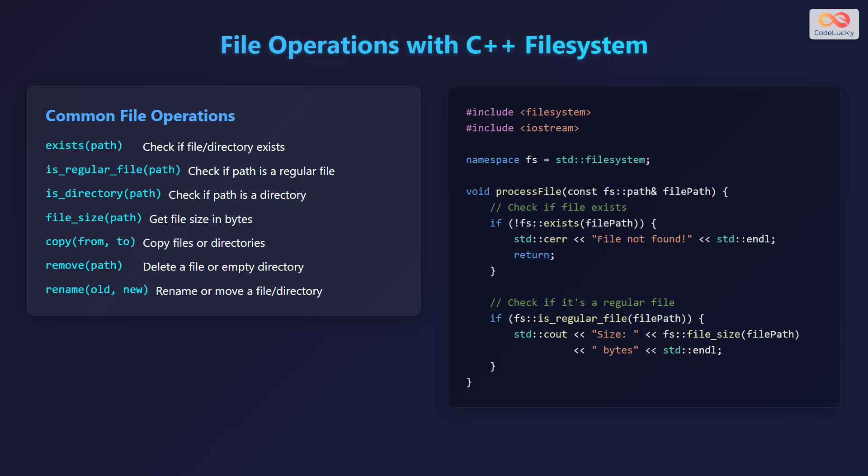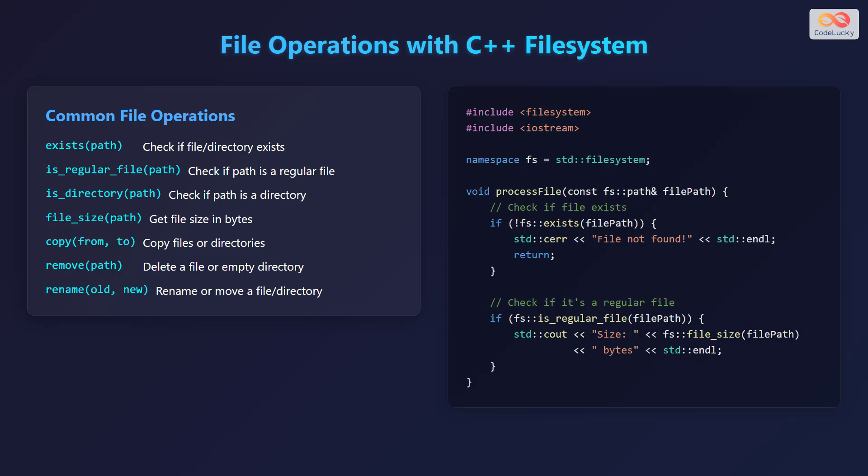The function remove() takes a path and deletes a file or an empty directory. The function rename() takes two paths — old and new — and renames or moves a file or directory. Here's an example of processing a file. The function process_file() takes a const reference to an fs::path. It checks if the file exists; if not, an error message is printed. Otherwise, it checks if the path is a regular file using is_regular_file(), and if so, prints the file size in bytes.